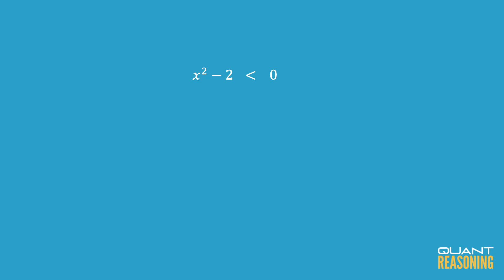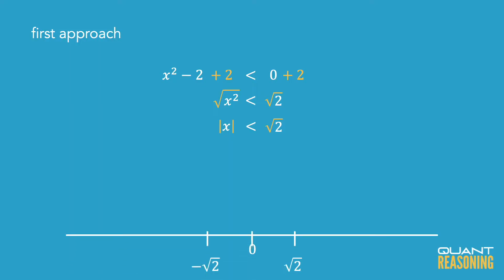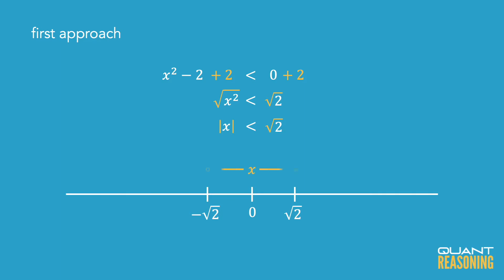The first approach is to add 2 to both sides of the inequality so that we have x squared is less than 2, then take the square root of both sides and apply an absolute value onto the unknown, because when we take an even root we don't know which side of 0 the whole thing started. So we'd say the absolute value of x is less than the square root of 2, which means x is located less than square root of 2 units away from 0.